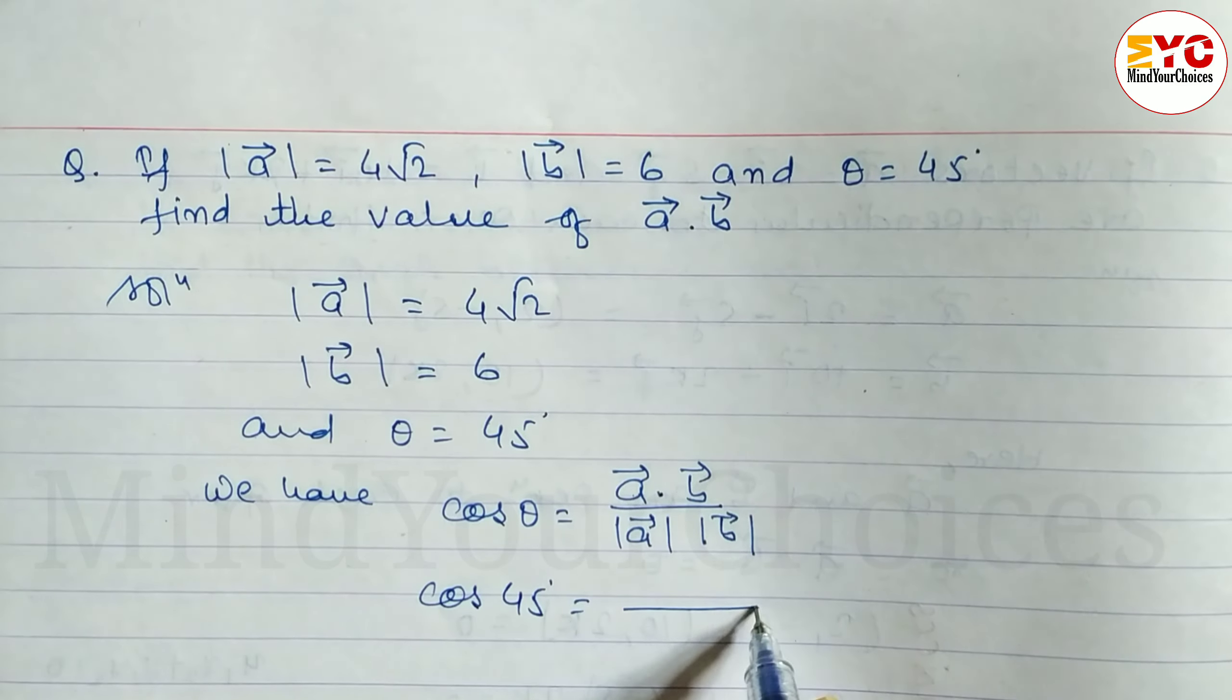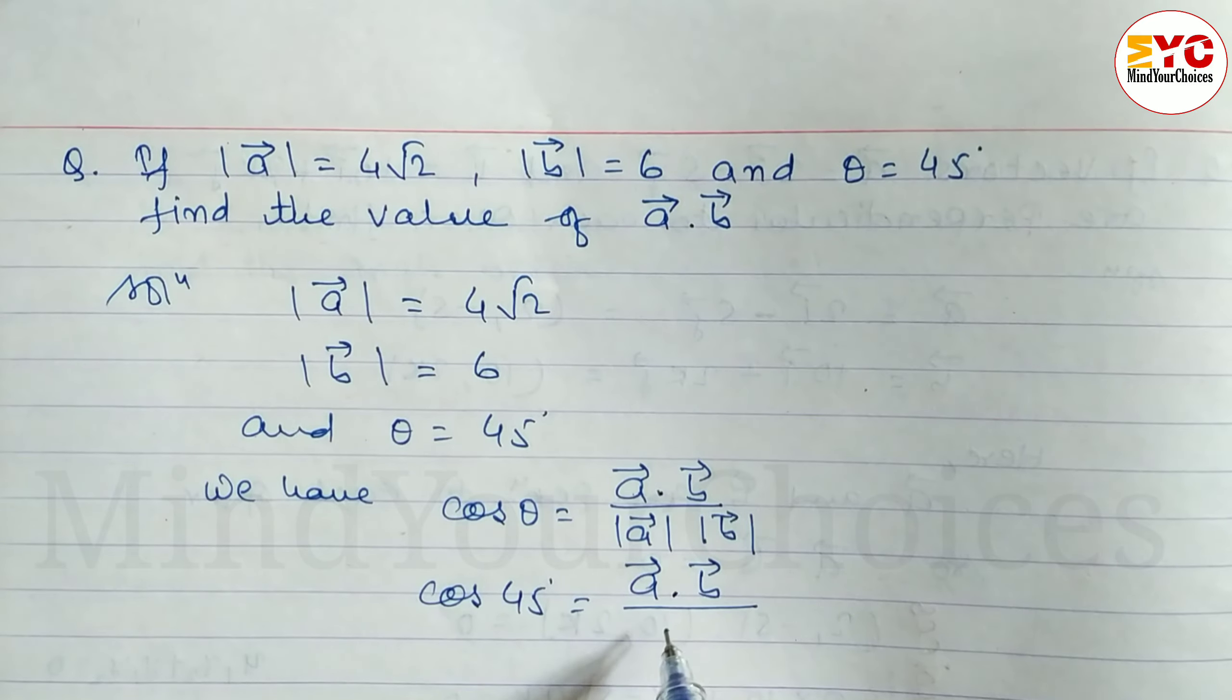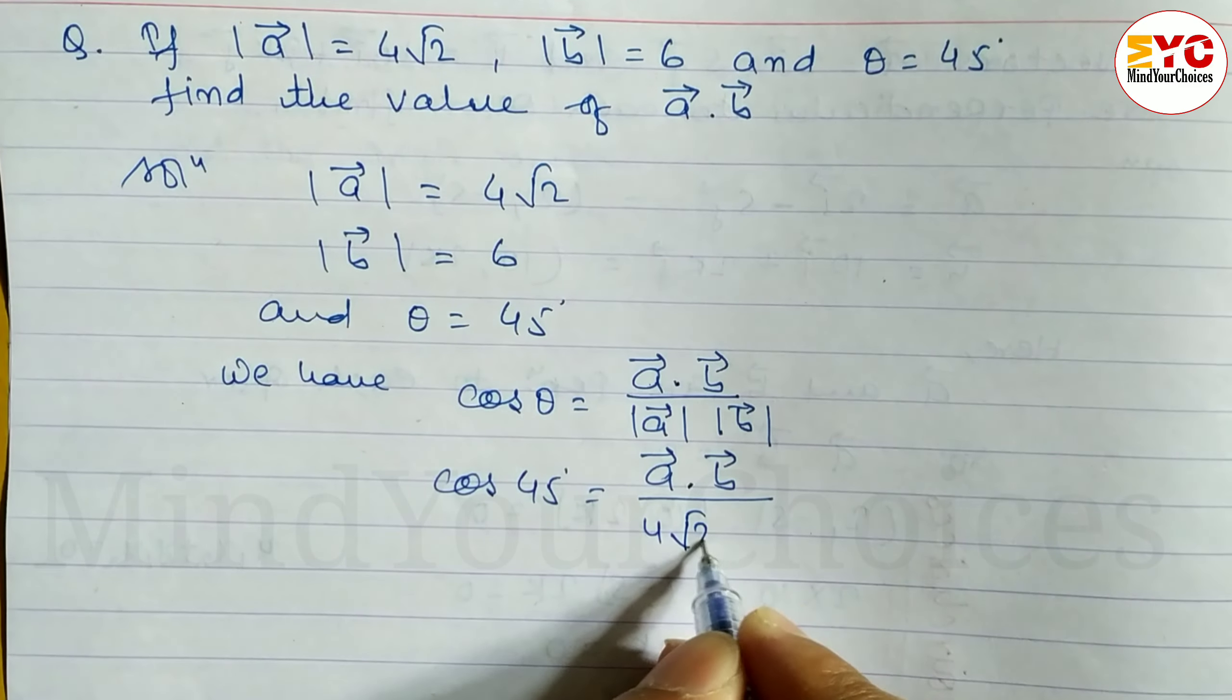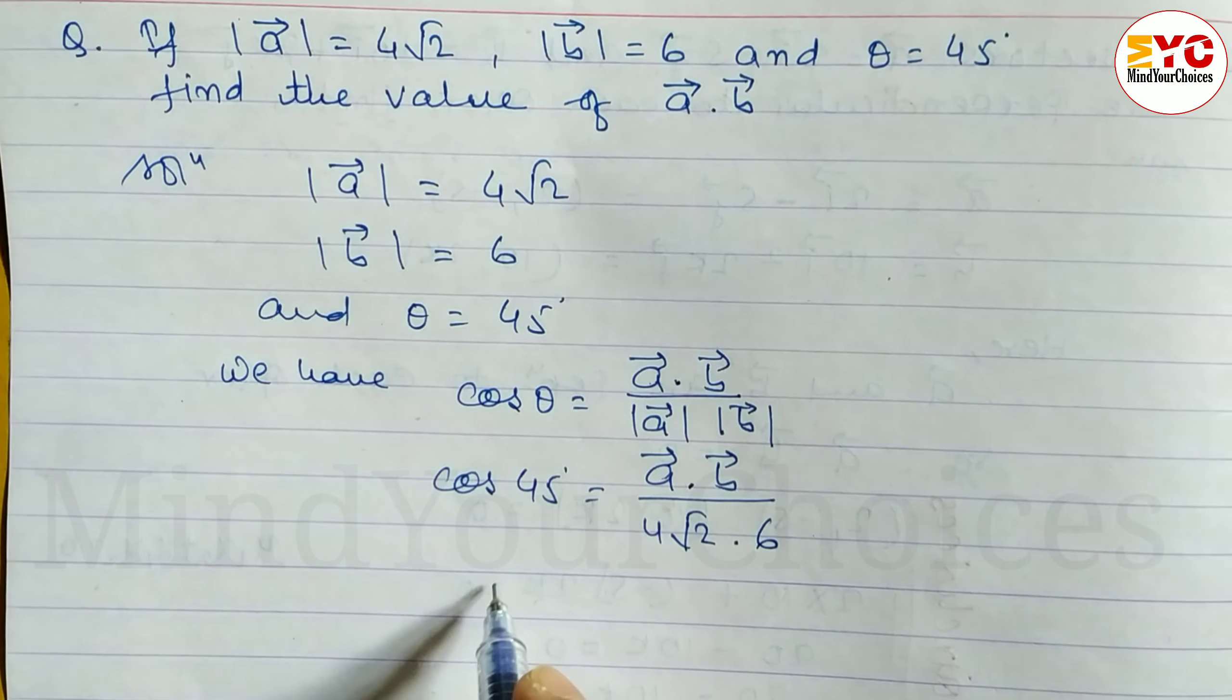So cos theta, in place of theta we write 45 degrees, is equal to a vector dot b vector. Modulus a is 4 root 2, modulus b is 6. So we write 4 root 2 into 6.